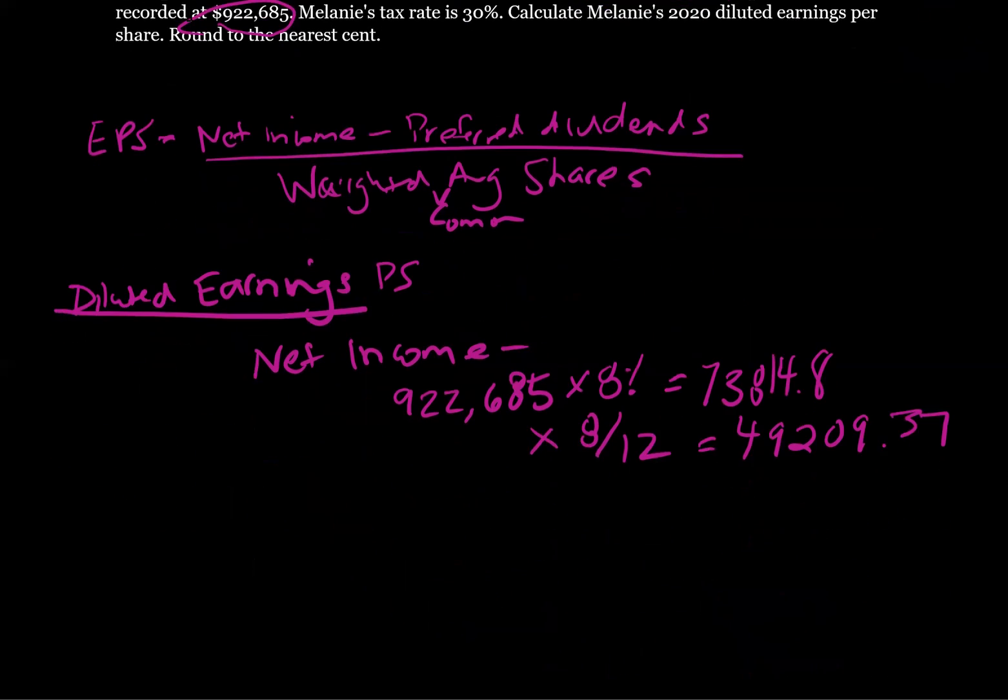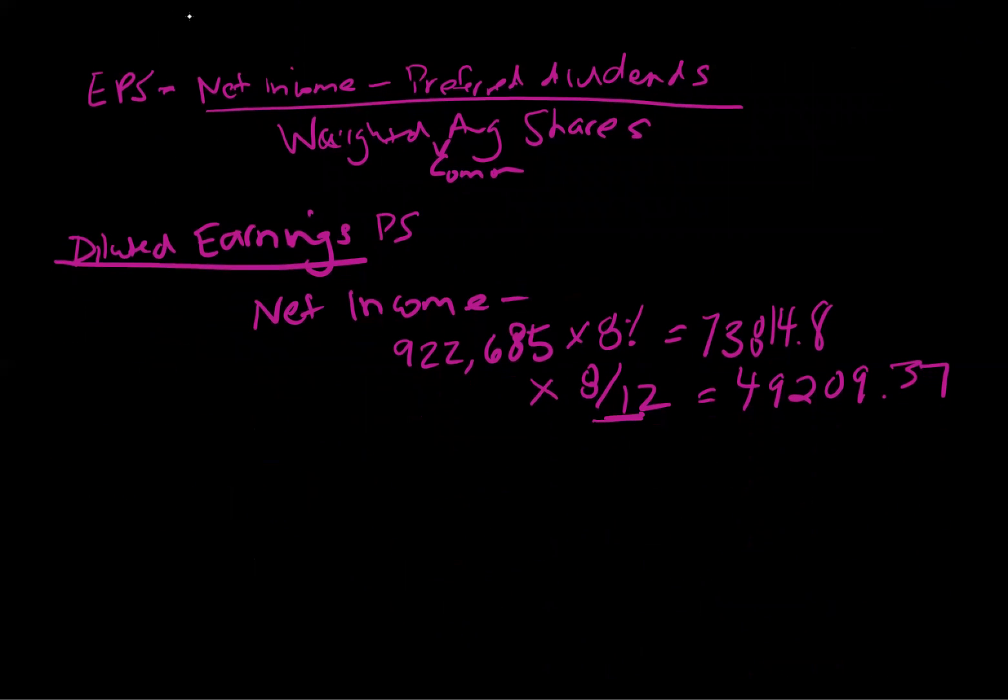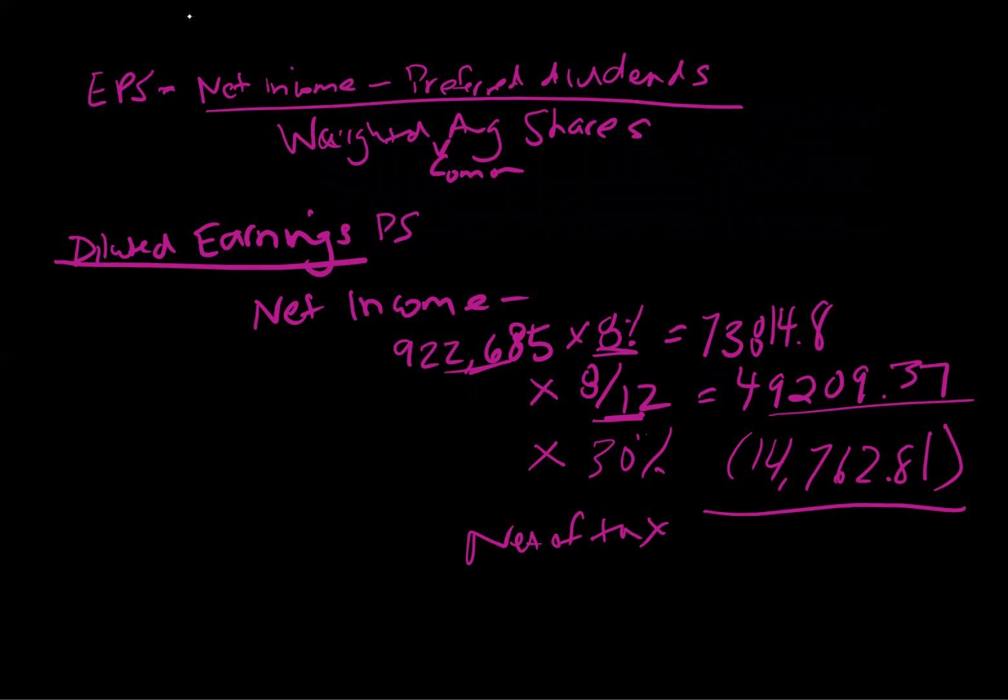And next, we're going to multiply it. This is the fraction of the year outstanding. This is the bond value times the market interest rate. And now we're going to multiply this by, so this is the pre-tax, then we're going to go 30%, which is going to give me $14,762.81 as a tax. So net of tax, we are going to end up with $34,447 rounded.